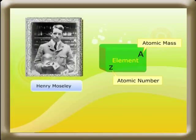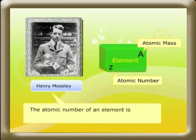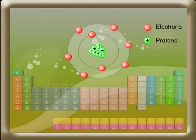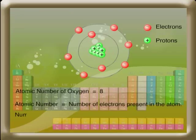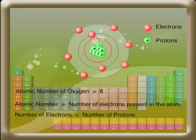Henry Moseley showed that the atomic number of an element is a more fundamental property than its atomic mass. In oxygen, there are eight electrons, so the atomic number of oxygen is 8. Thus, the atomic number of an element is numerically equal to the number of electrons present in the atom. Since electrons in oxygen are 8, the same number of protons are also present — that is, 8 protons. The number of electrons is equal to the number of protons in the nucleus.